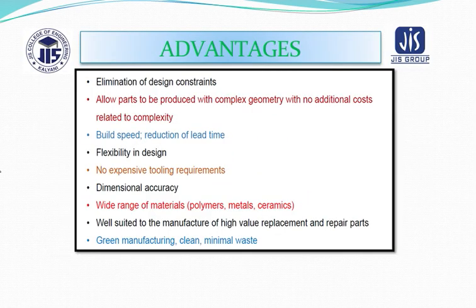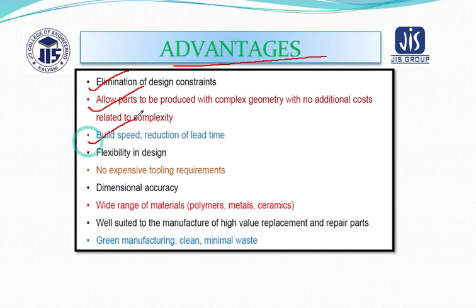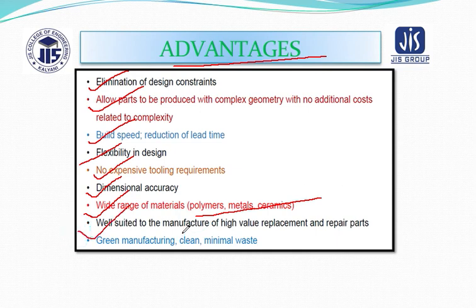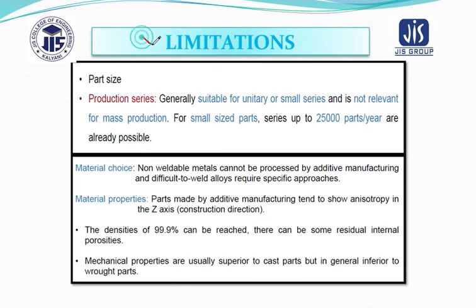What are the advantages? Elimination of design constraints allows parts to be produced with complex geometry at no additional cost; build speed; flexibility in design; no expensive tooling requirements; dimensional accuracy; wide range of materials including polymers, metals, and ceramics; well-suited to manufacturing high-value replacement and repair parts; preferred for green manufacturing — clean processes with minimal wastage.